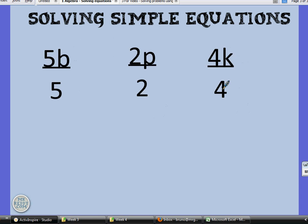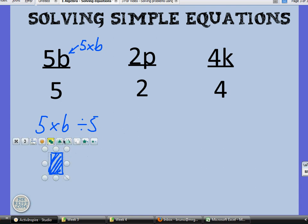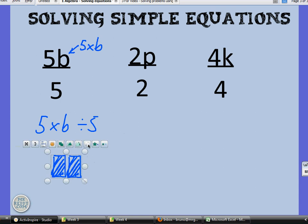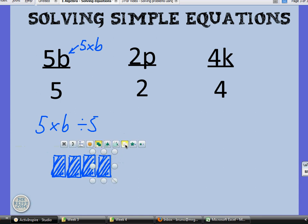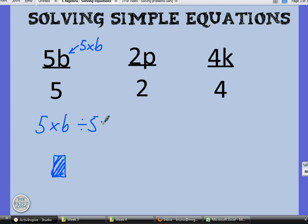You also need to know what would happen if we had 5b. Remember, that stands for 5 times b. If you had 5b divided by 5, so 5 lots of b divided by 5. If that was a bar model, it would look something like this. You'd have 5 of those, and one more. And then divide that by 5, you get back to that. So 5 times b divided by 5 is just b.